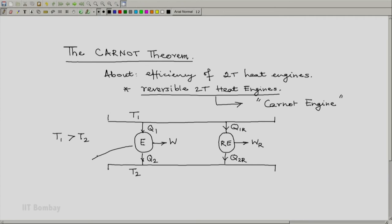Now the efficiency of this engine, heat engine, by the definition of efficiency is W by Q1. The efficiency of this reversible heat engine will be, let us call it eta R, that will be WR by Q1R.